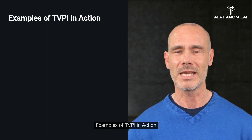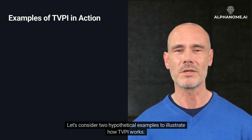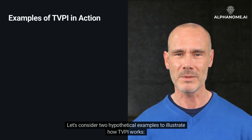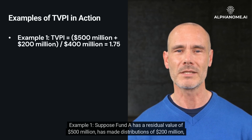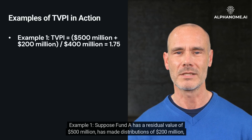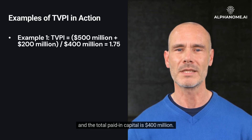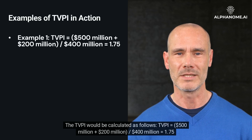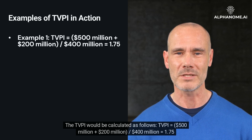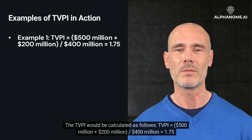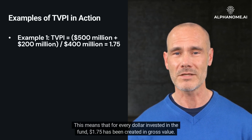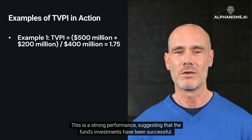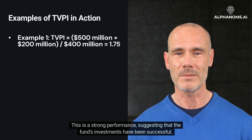Let's consider two hypothetical examples to illustrate how TVPI works. Example 1: Suppose Fund A has a residual value of $500 million, has made distributions of $200 million, and the total paid-in capital is $400 million. The TVPI would be calculated as follows: TVPI equals $500 million plus $200 million, divided by $400 million, equals 1.75. This means that for every dollar invested in the fund, $1.75 has been created in gross value. This is a strong performance, suggesting that the fund's investments have been successful.